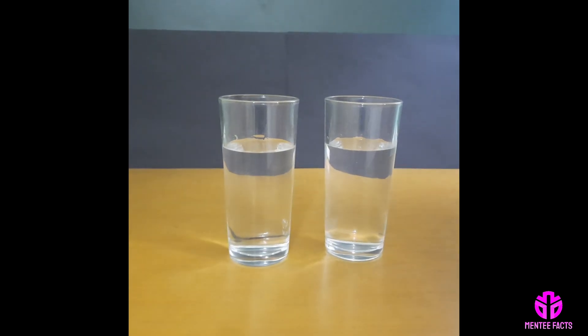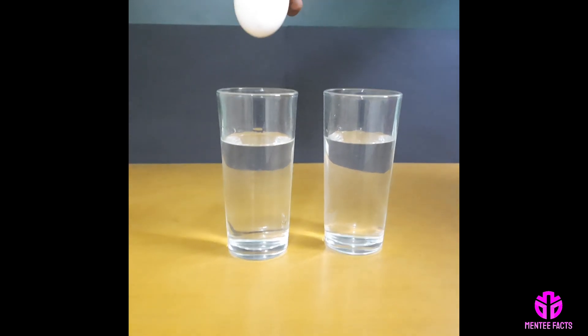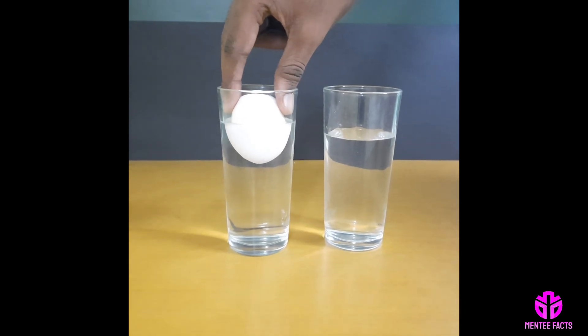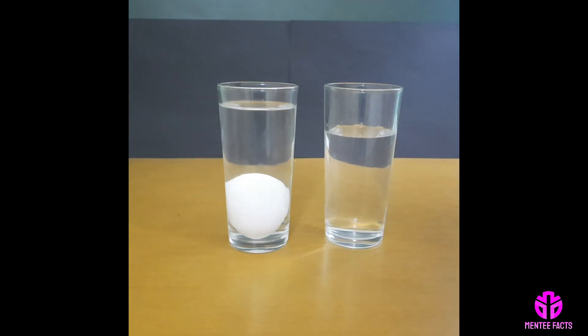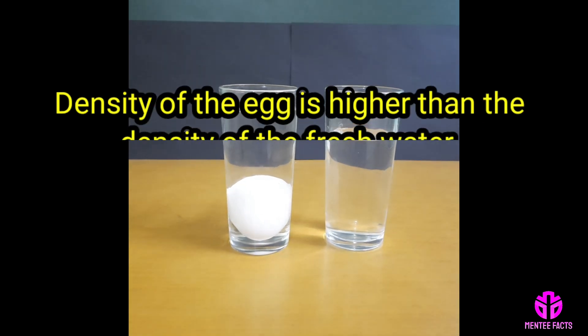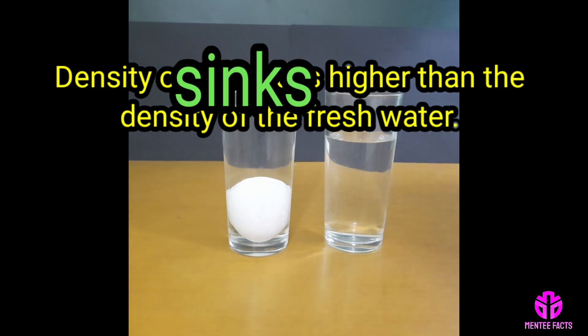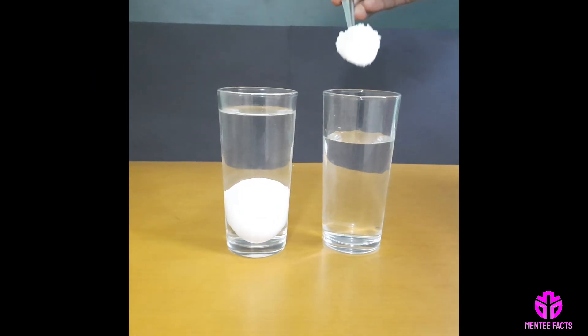Fill two clear glasses with fresh water. Put an egg in one glass. It sinks to the bottom because the density of the egg is higher than the density of fresh water, so it sinks.